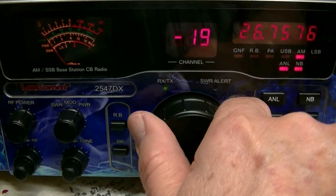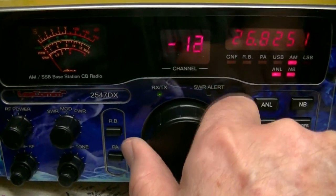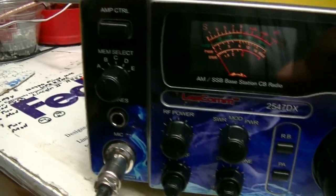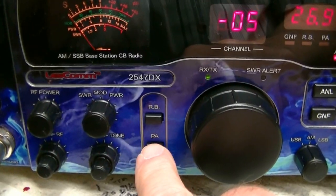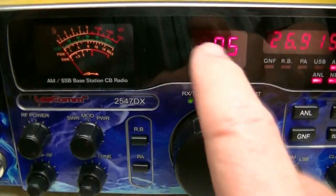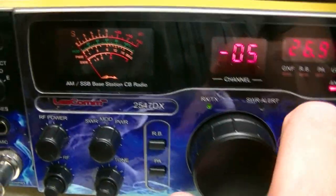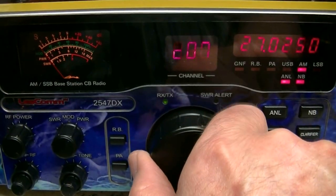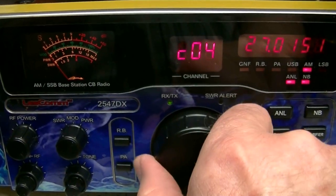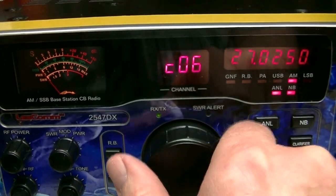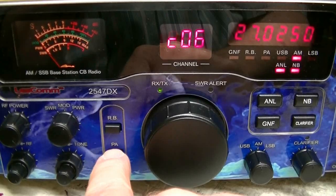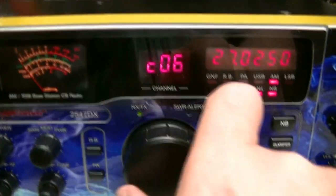Now let's go up to 27.915, which is a call channel. We're going to put that one in B. Press the PA button again, see it goes away, and now we've stored that one in B. Now let's go up here to channel 6. We're going to put channel 6 in C. Same thing, push the PA button in. You just stored that frequency.